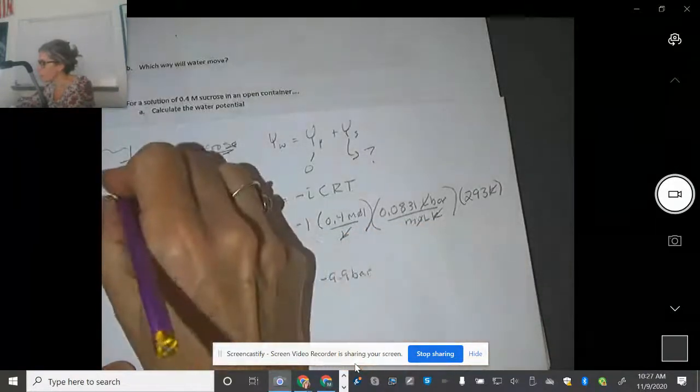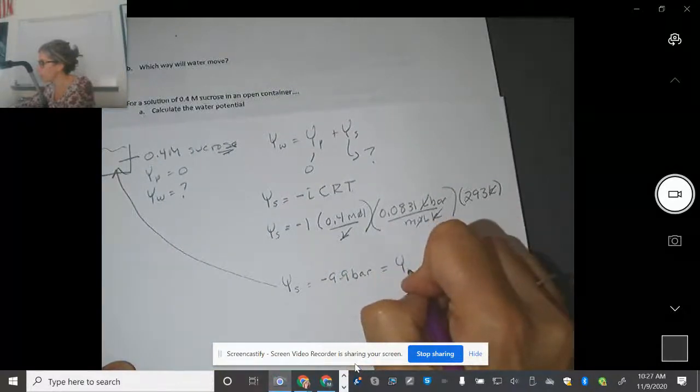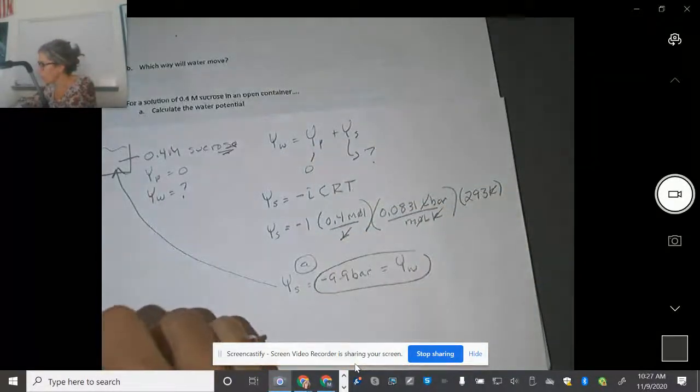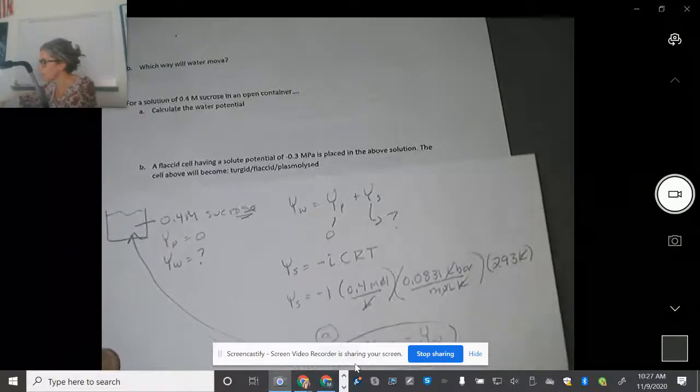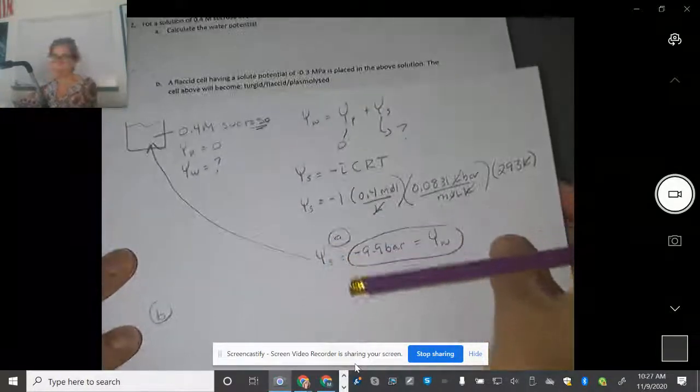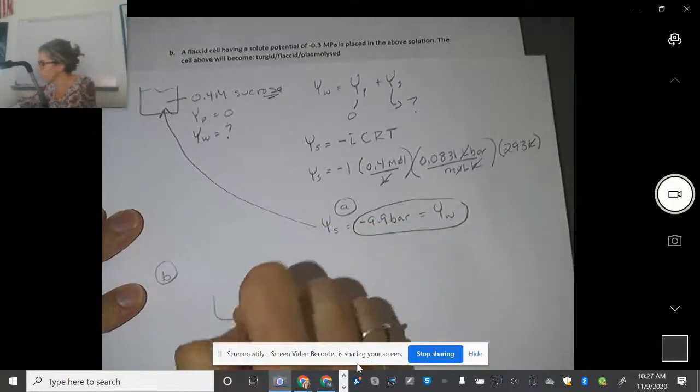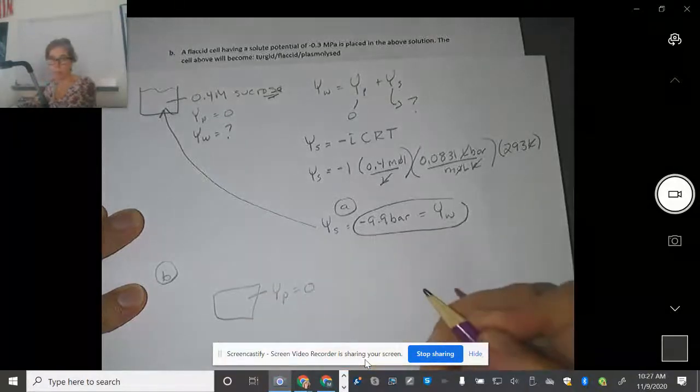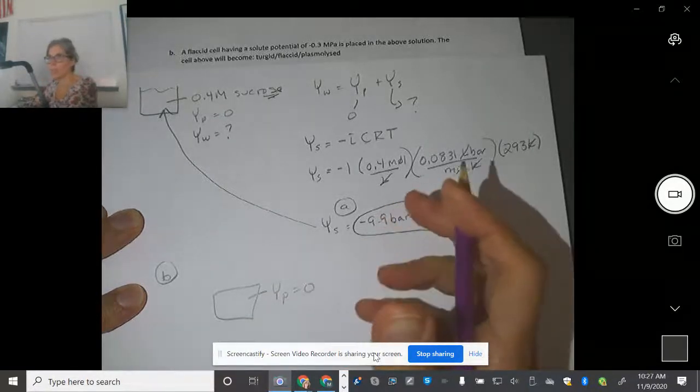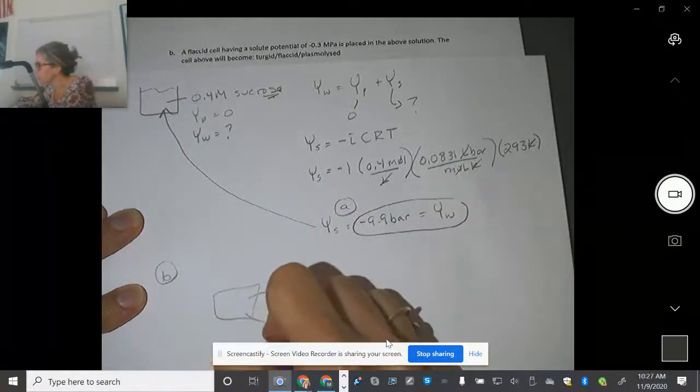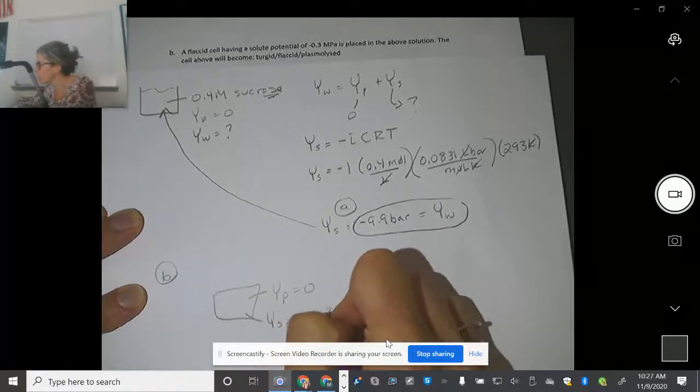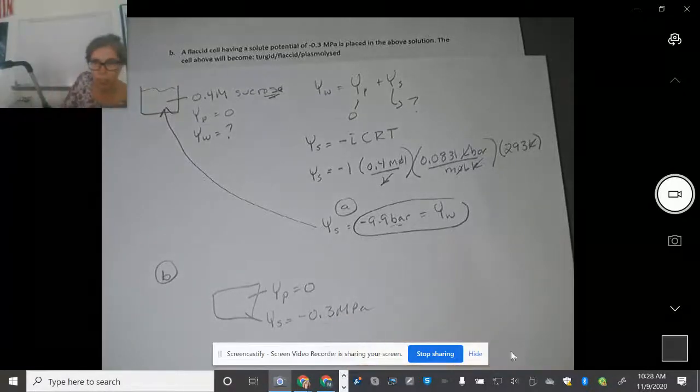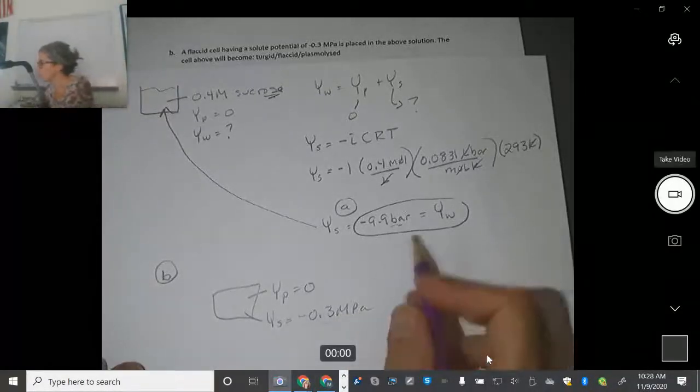So that's what I've got in here. And that, we said, was the same thing as the water potential because there's no pressure potential here. So that's part A. Part B says, a flaccid cell having a solute potential of negative 0.3 megapascals. So we've got a cell here and it's flaccid. By flaccid, I know that right now its pressure is zero. That's what flaccid means. There's no extra water that's shoved into it. And it says it has a solute potential of negative 0.3 megapascals. So I have a problem because this is in bars and that's in megapascals. So I need to do a conversion with that.